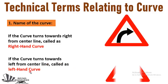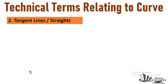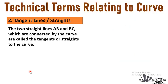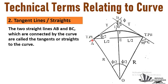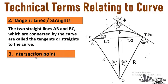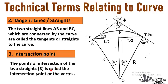The second term is tangent lines, which are also called straights. The two straight lines AB and BC, which are connected by the curve, are called tangents or straights of the curve. The lines AB and BC are called tangent lines or straights of the curve.